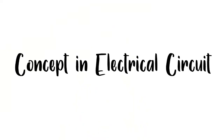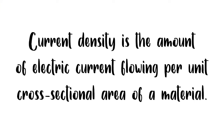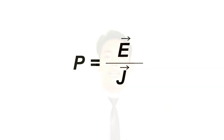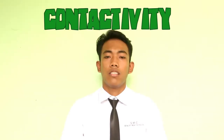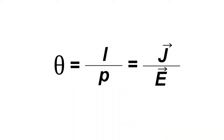Concept: analytical circuit. Electrical current in the external circuit is directed from the positive to negative terminal. Current density is the amount of electrical current flowing per unit sectional area of a material. Resistivity: P equals E vector over J vector. Conductivity: sigma equals 1 over P, which equals J vector over E vector. One of the best ways to understand how electricity works is through circuit analysis.